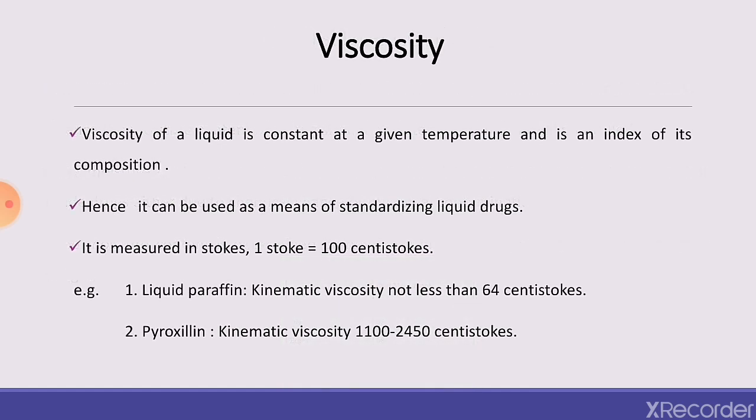Next is viscosity. Viscosity of a liquid is constant at a given temperature and is an index of its composition, hence it can be used as a means of standardizing liquid drugs. For example, liquid paraffin has kinematic viscosity not less than 64 centistokes, and pyroxylene has kinematic viscosity 1100 to 2450 centistokes. Viscosity is measured in stokes; one stoke is equal to 100 centistokes.